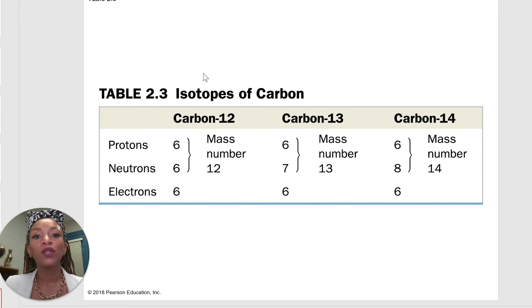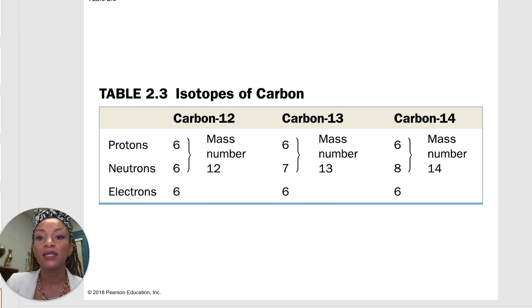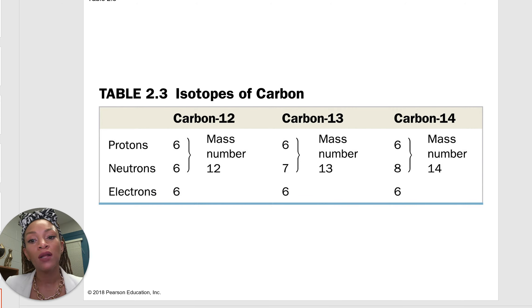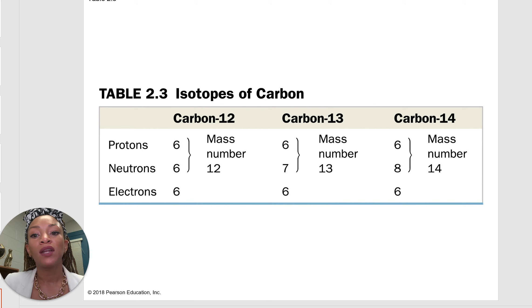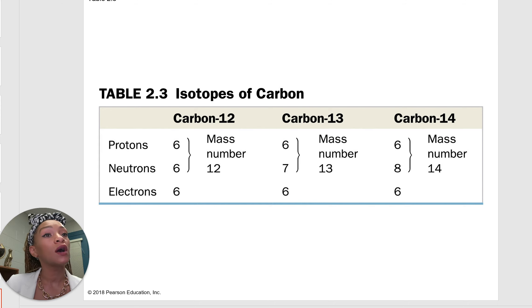Looking at isotopes of carbon: we have carbon-12, the most common; carbon-13; and carbon-14. For carbon-12, we have six protons and six neutrons. Something important to note is that protons are always equal to the number of electrons, and that doesn't change. The only thing that changes is the number of neutrons. Carbon-13 has seven neutrons, and carbon-14 has eight neutrons. Isotopes vary only in the number of neutrons — the protons stay the same.